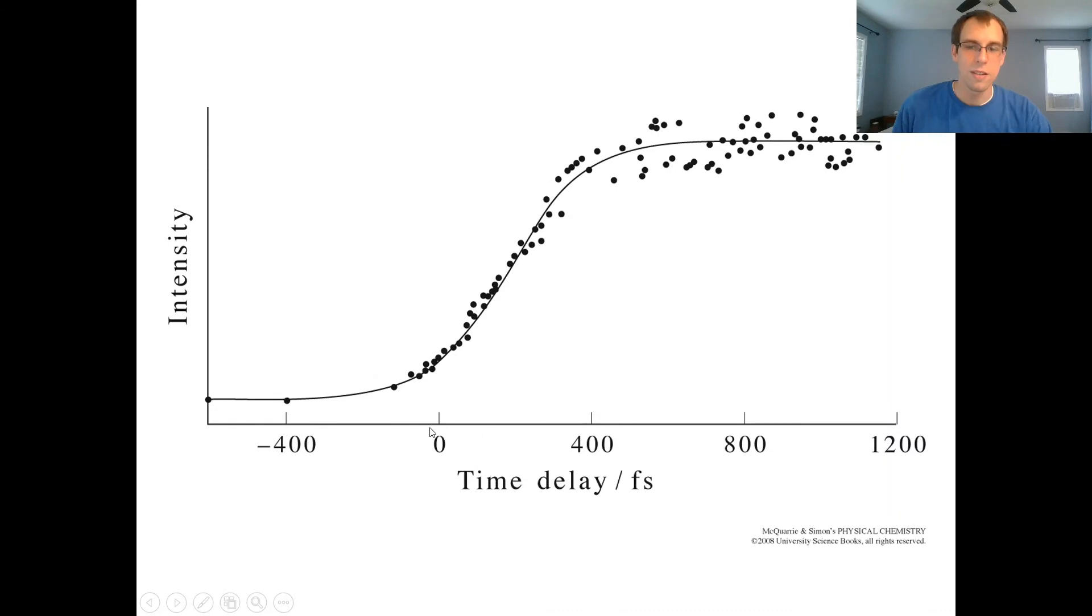We can measure things as a function of time delay. The intensity here is how much light is being absorbed by the cyanide. You can see if you measure the probe before the pump even shows up, as you expect, you get no absorption.